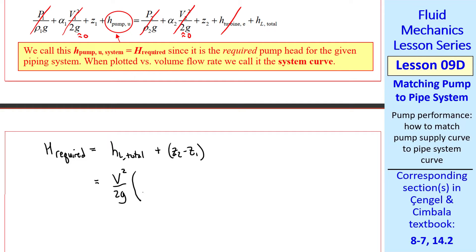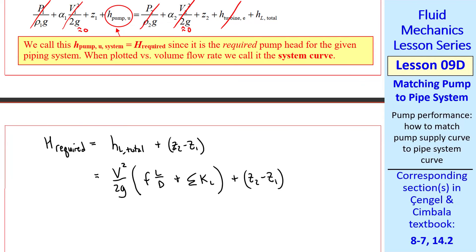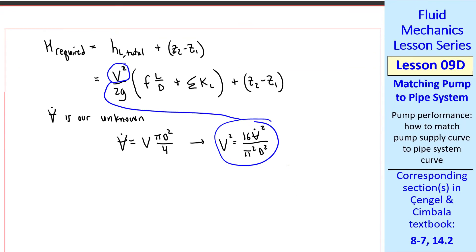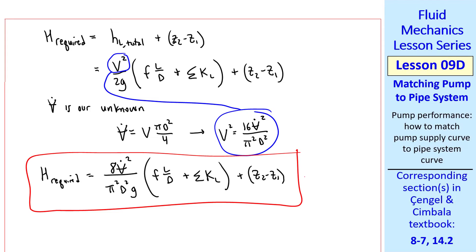In this problem, we have only one diameter of pipe. So we can use our simpler equation for total head loss, namely V squared over 2G, FL over D, plus sigma KL, plus the elevation difference. V dot is our unknown. And V dot is speed times area, from which we get V squared, which we can plug into here. So we have an equation in terms of V dot, rather than V. We get this, which we call our system curve.